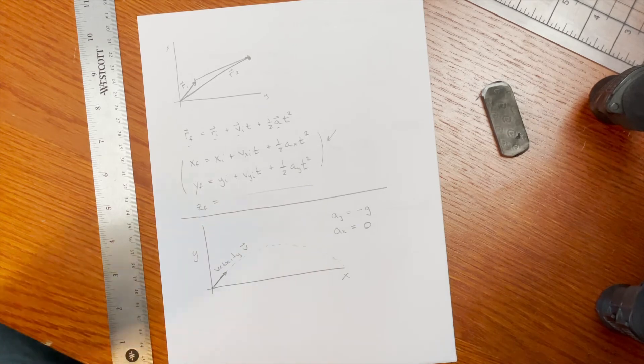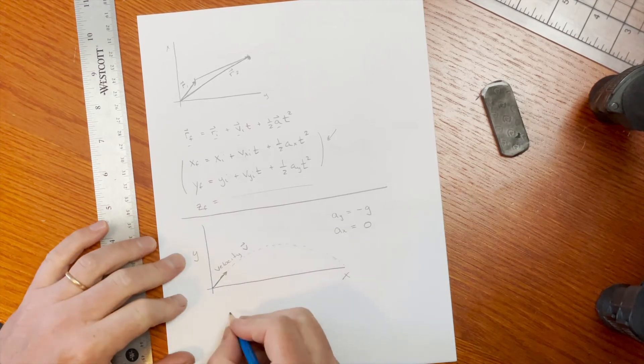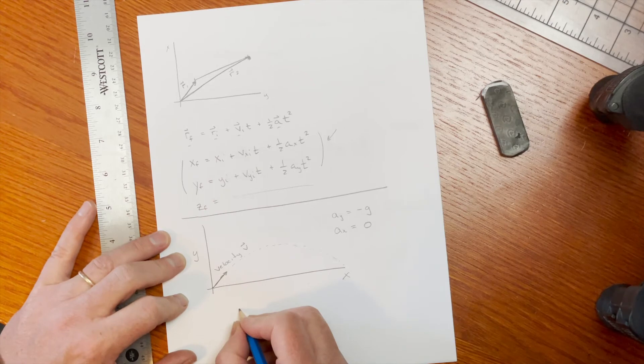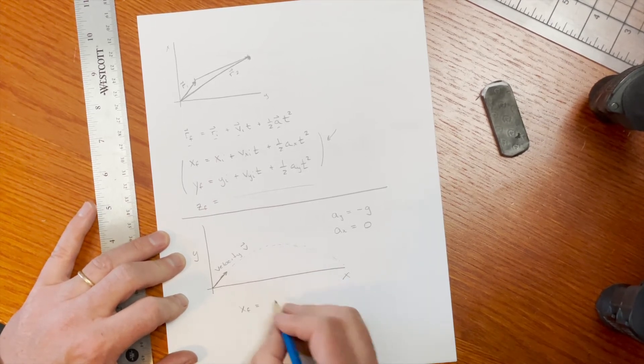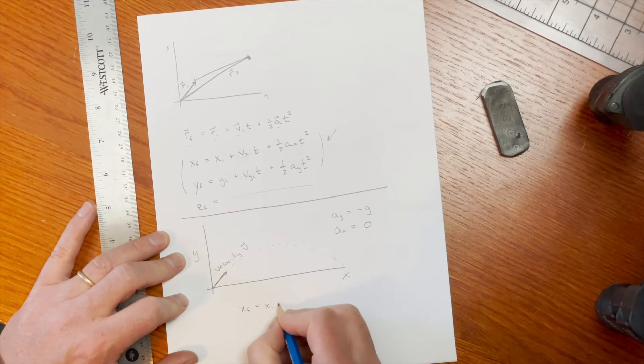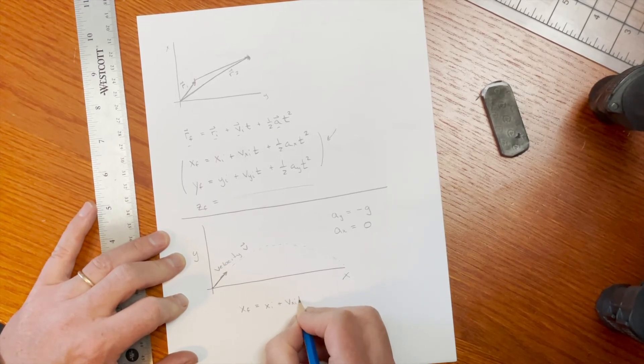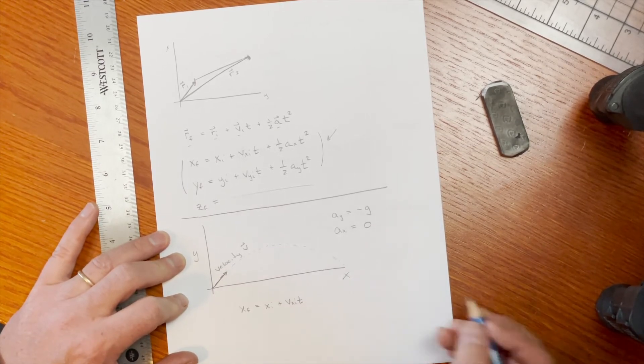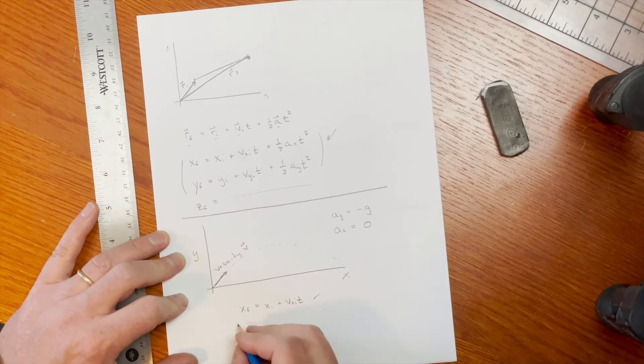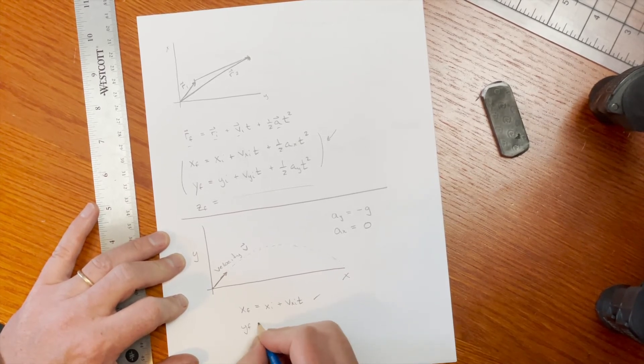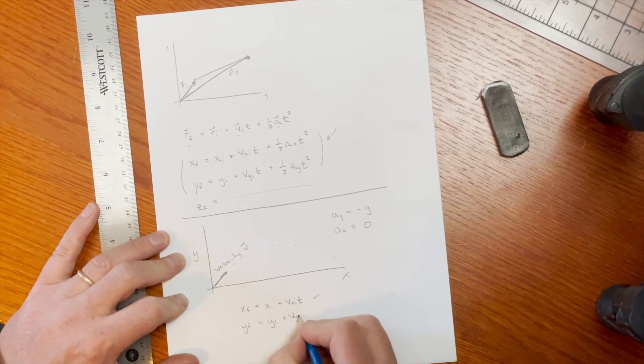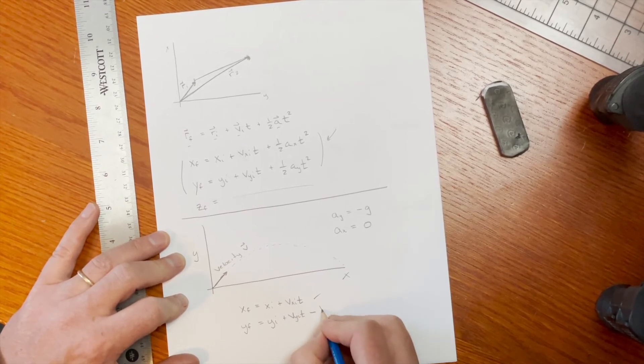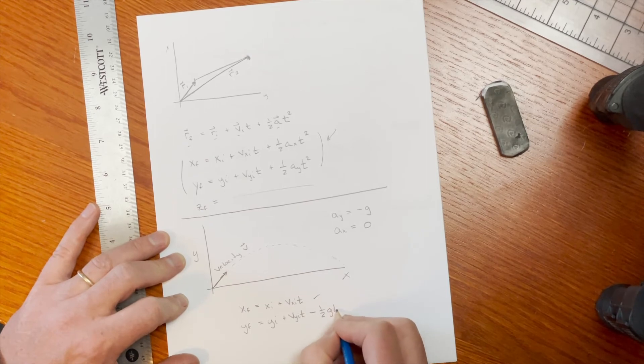So I can take x final is going to be equal to my x initial plus vx initial times t, and then there's no acceleration so that one's done. And then I can do my y final is equal to y initial plus vy initial times t minus one half g t squared.